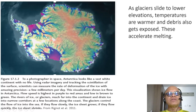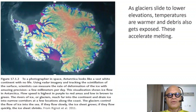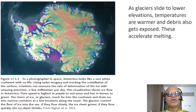If the glacier is flowing fast, then it is thinning. And if it's flowing slowly, then it can accumulate mass and grow. The rivers of ice and glaciers reach into the continent or drain into narrow corridors at a few locations along the coast. You can see all these features here. The glaciers actually control the flow of ice into the sea.